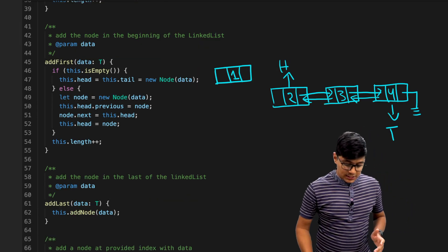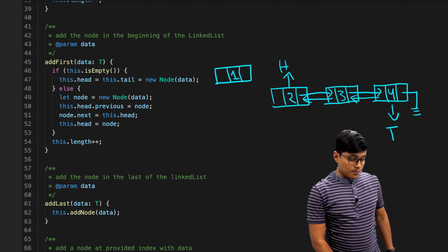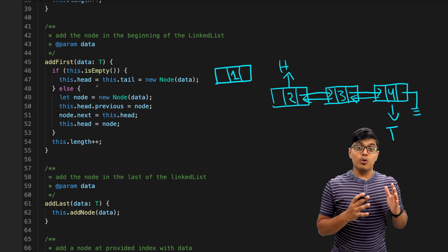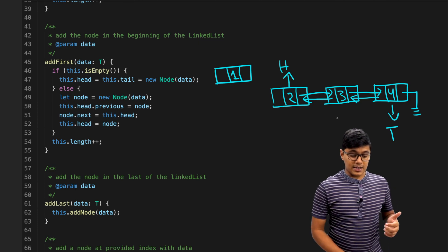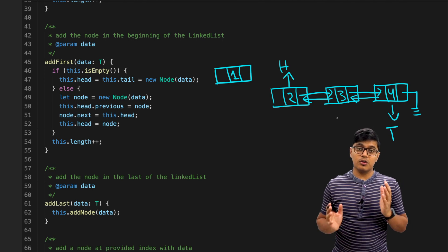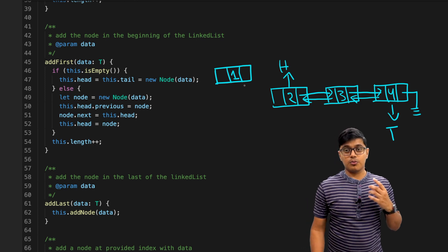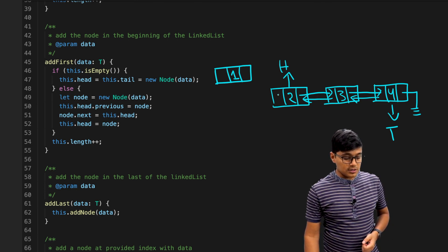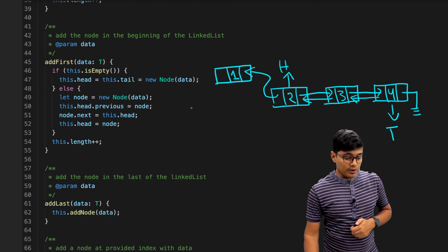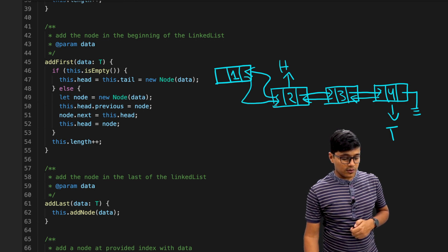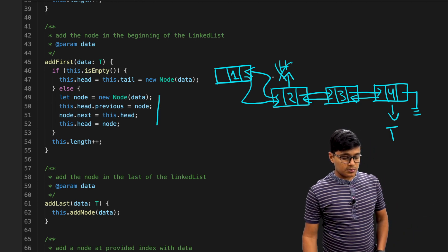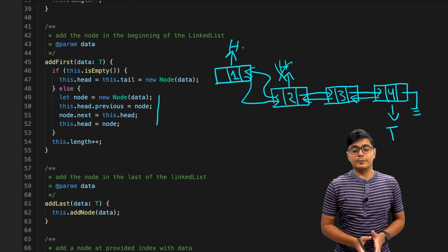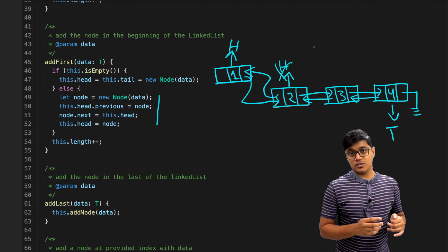Now let's see how to add a node at the beginning. Suppose we have three nodes and want to add a node at the start. If the list is empty, create a node and assign both head and tail to it. Otherwise, we create the new node — say value 1 — then set head.previous to the new node, and the new node's next to the head. Finally we move the head reference to the new node. That's adding at the first position.